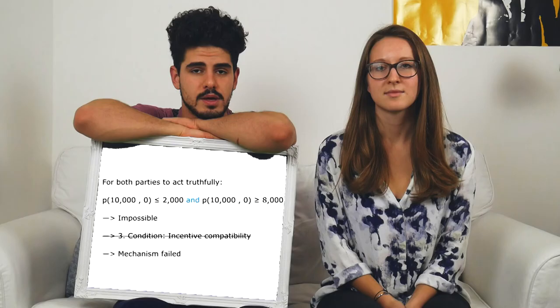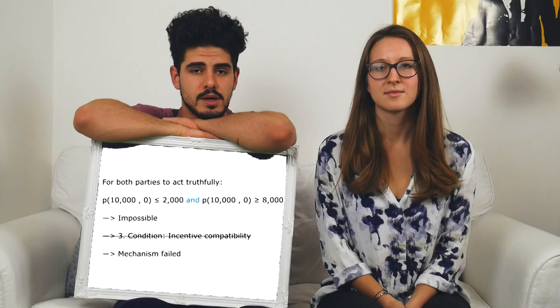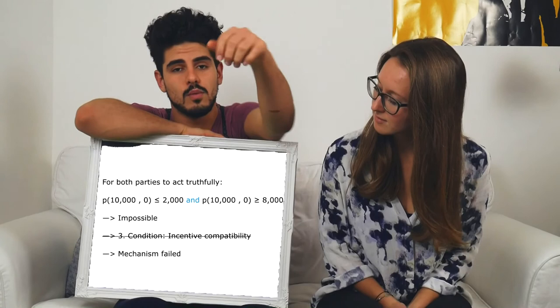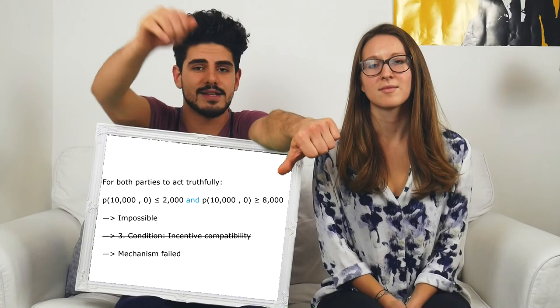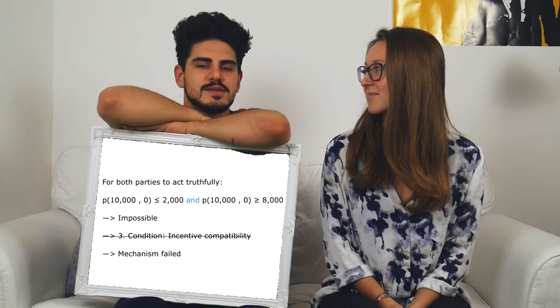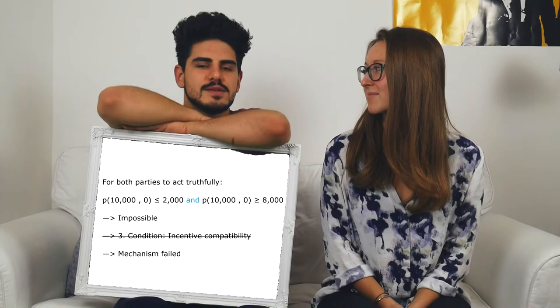We need a price that is below 2,000 for Adrian and above 8,000 for Rebecca. This doesn't work — it's impossible to satisfy the third condition for both of them at the same time. Our general mechanism doesn't work. So what we did was test a specific mechanism and a more general form of mechanism. The specific mechanism did not lead to an efficient allocation. The more general form did not meet the required condition of incentive compatibility. So from this we can conclude that no mechanism exists that can assure an efficient trade — that trade always takes place when it should under the given conditions. And this is the proof for the Myerson-Satterthwaite theorem.